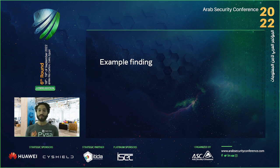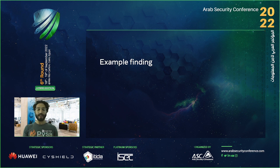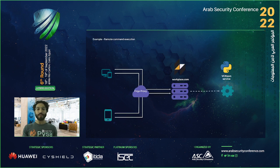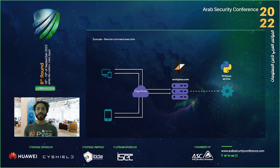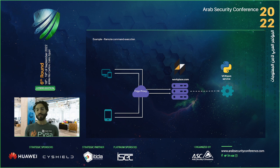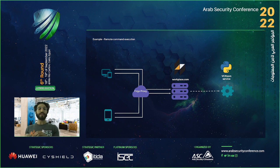Let's go into an example finding. This is a real vulnerability found last year, and it's cross-language — I'll show you the value of cross-language analysis here. The vulnerability was found on Workplace — if you're not familiar, think of it as Facebook for companies: a communication platform similar to a mix between Facebook and Slack, with work chat, groups, posts, everything similar to Facebook. The vulnerability was that someone could send a request to Workplace, which is written in PHP, and Workplace would call a service called VC Room Service. The vulnerability was in the VC Room Service — written in Python, very similar to the earlier example — but exploitable through workplace.com. The VC Room is the feature used for video calls and video conferences.